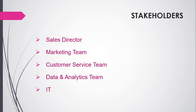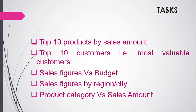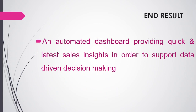The stakeholders will be the sales director, marketing team, customer service team, data and analytics team, and IT team. I will be part of the data and analytics team. The problem statement is divided into these tasks: top 10 products by sales amount, to get the most valuable customers of the company, to know the sales figures versus the budget amount, sales figures by region or city or country, and product category versus sales amount. The end result should be an automated dashboard providing quick and latest sales insights to support data-driven decision making.